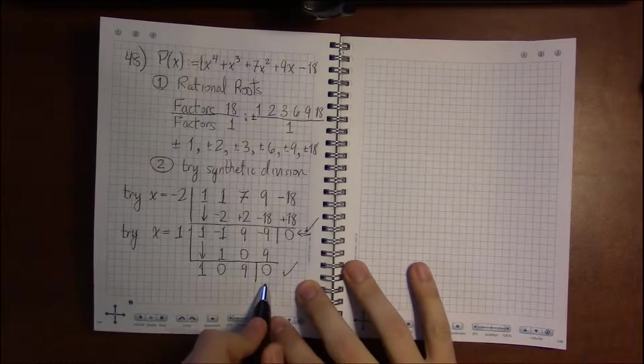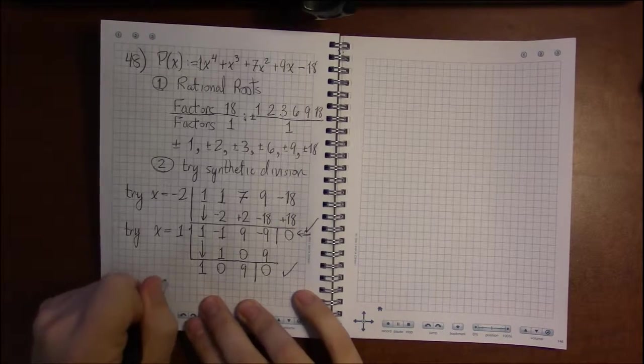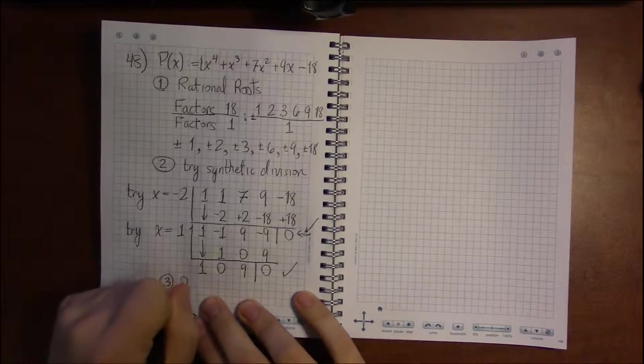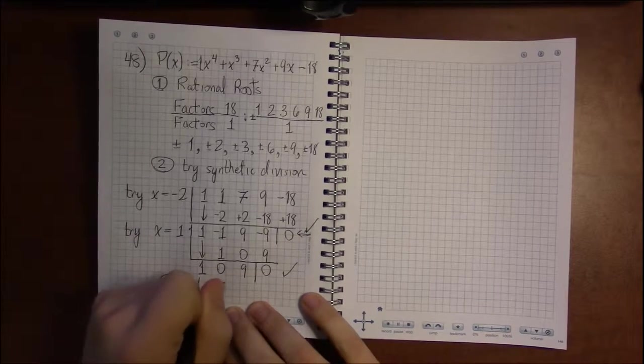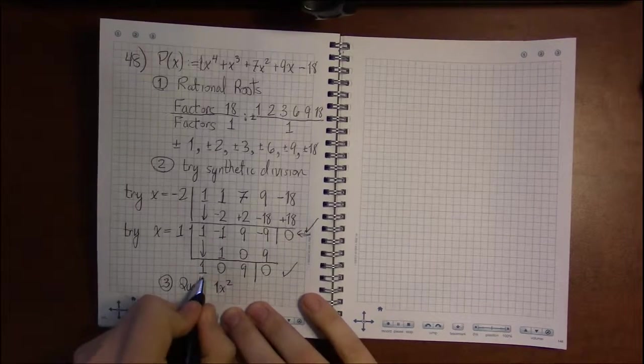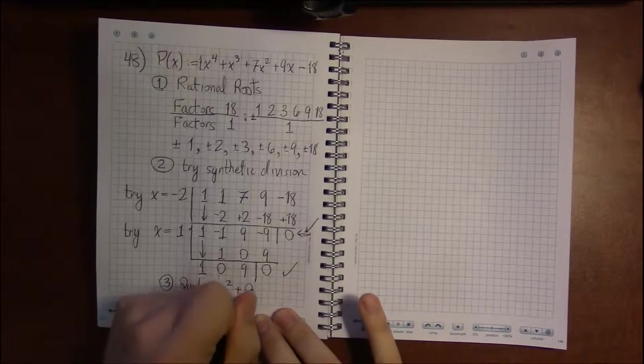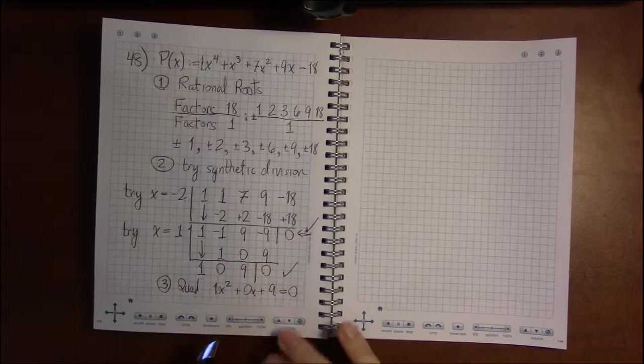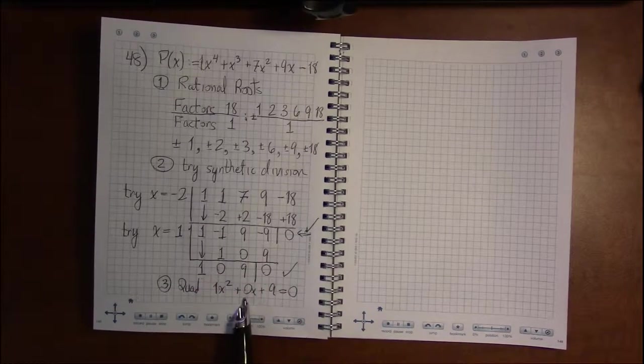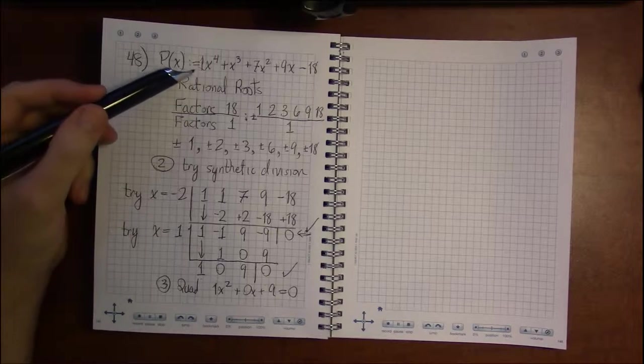Now 1, 2, 3 numbers and a 0. I'm at my stopping spot. Now I have my quadratic: 1x squared plus 0x plus 9. I want to solve this to see when is this equal to 0, because the zeros here will be the final two zeros on problem 48.